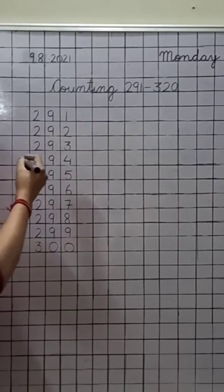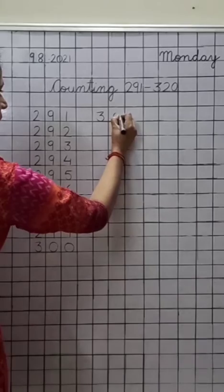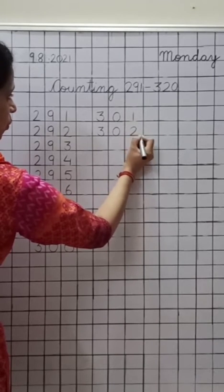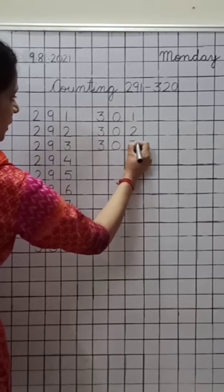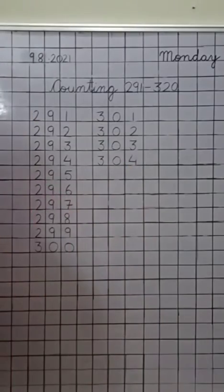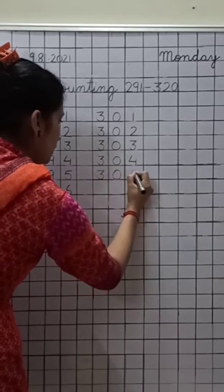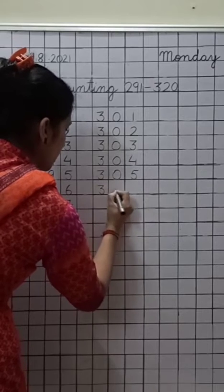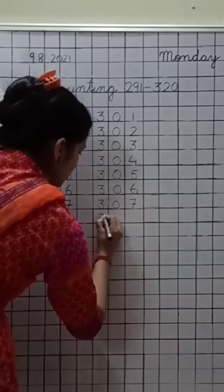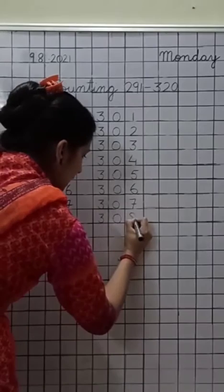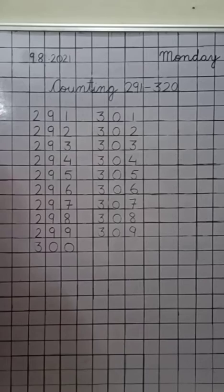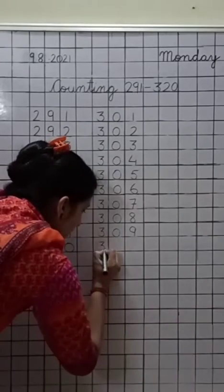Now leave this line. Write down here: 301, 302, 303, 304, 305, 306, 307, 308, 309. What comes after 9? What comes after 9? 10. Very good. So here we will write down 310.